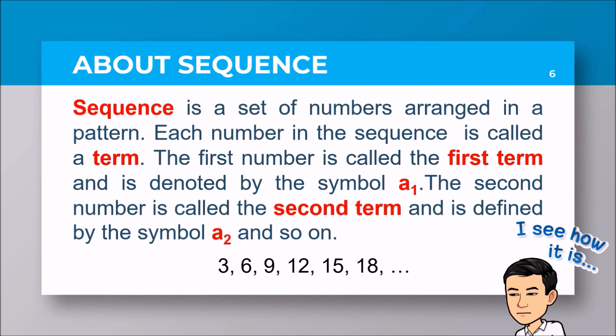A sequence is a set of numbers arranged in a pattern. Each number in a sequence is called a term. The first number is called the first term and is denoted by the symbol a sub 1. The second number is called the second term and is defined by the symbol a sub 2, and so on.